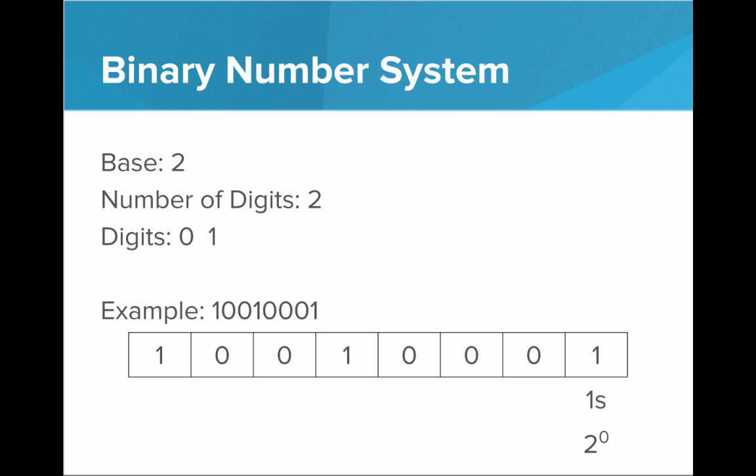So this is the 1's place, double it to get 2, double it to get 4. See if you can do the rest in your head. So from here we would get the 8's place, the 16's place, the 32's place, the 64's place, and the 128's place. We have 2 to the 0, all the way up to 2 to the 7.